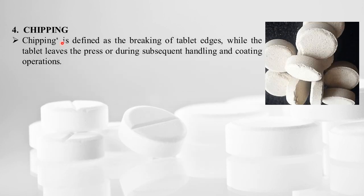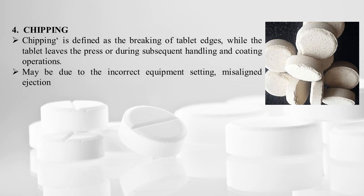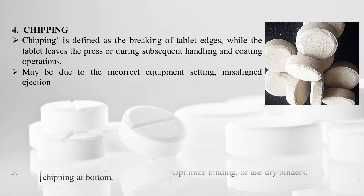Chipping is defined as breaking of the tablet edges while the tablet leaves the press during subsequent handling operations and coating operations. Chipping may be due to incorrect equipment settings, incorrect settings of dies and punches, or misaligned ejection of the tablet.